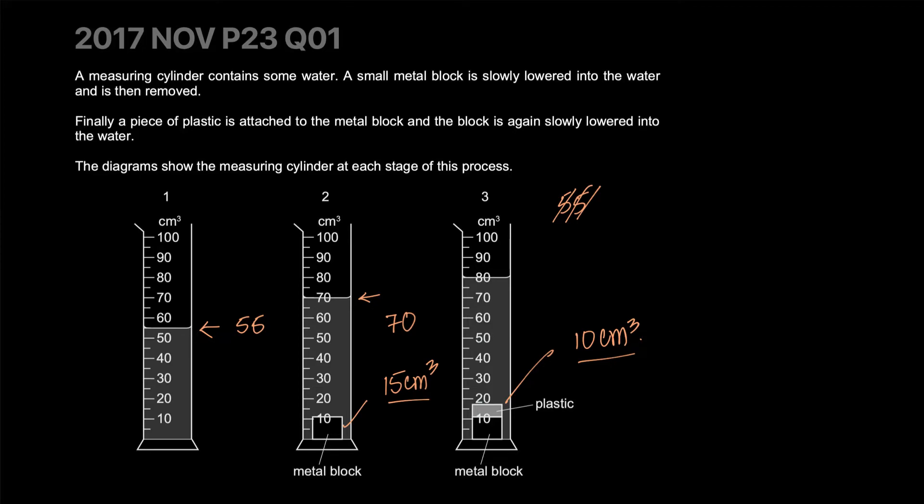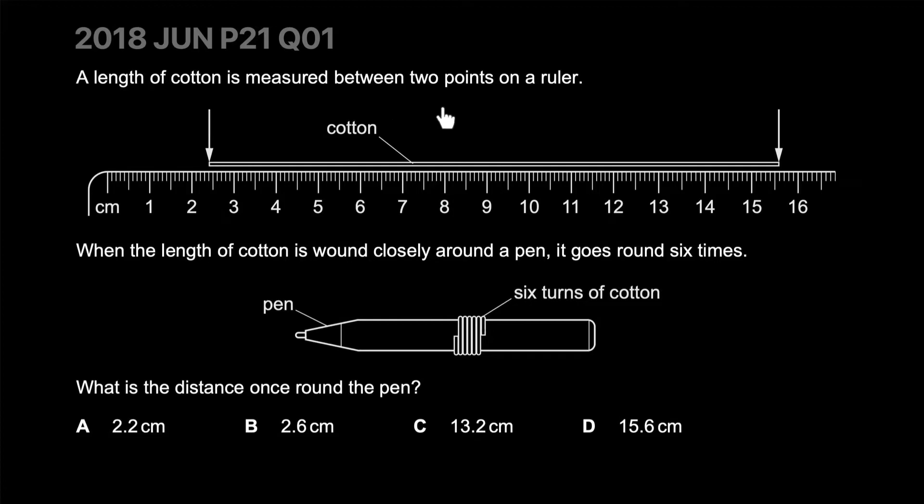A length of cotton is measured between two points on a ruler. It starts at 2.4 centimeters and ends at 15.6. So the length of the wire is 15.6 minus 2.4, which is 13.2 centimeters.